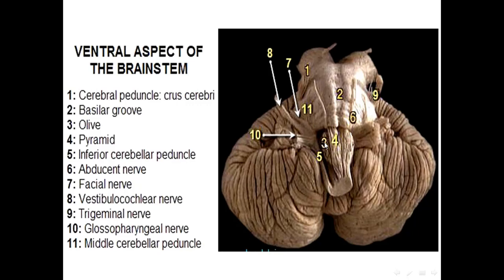Number four is the pyramid, number three is the olive, number five is the inferior cerebellar peduncle, number two is the basilar groove, number eleven is the middle cerebellar peduncle, number six is the abducent nerve, number nine is the trigeminal nerve, and this is the facial nerve, the vestibulocochlear nerve, and the glossopharyngeal nerve.